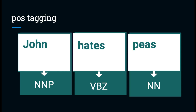Part of speech tagging is the process of assigning one of those 50 or so part of speech tags to each token in a sentence. For example, in the sentence 'John hates peas,' John is a proper noun, hates is a present tense third person singular verb, and peas is an ordinary noun.